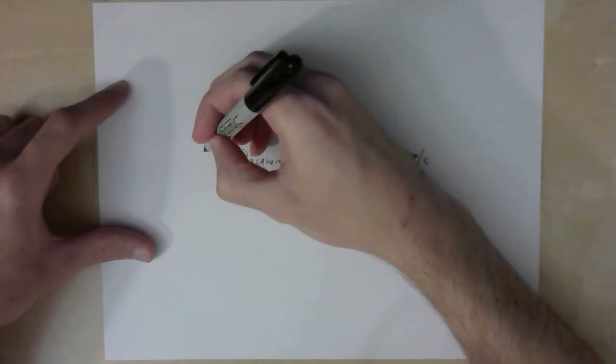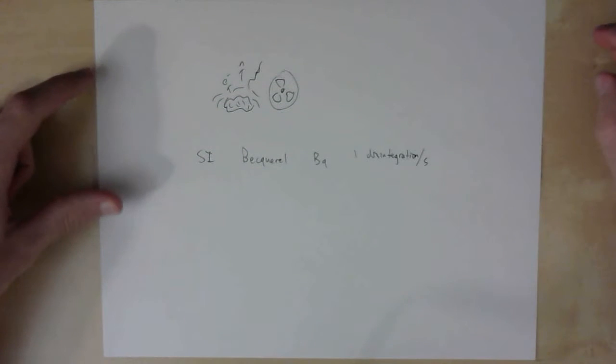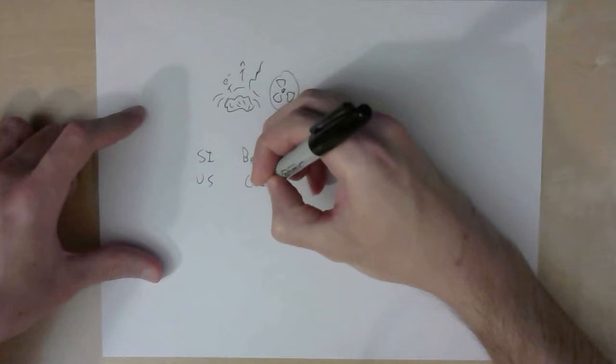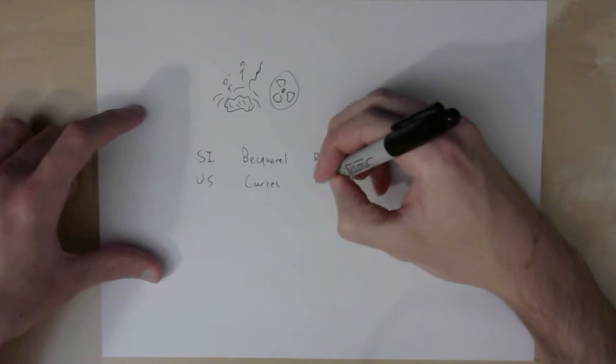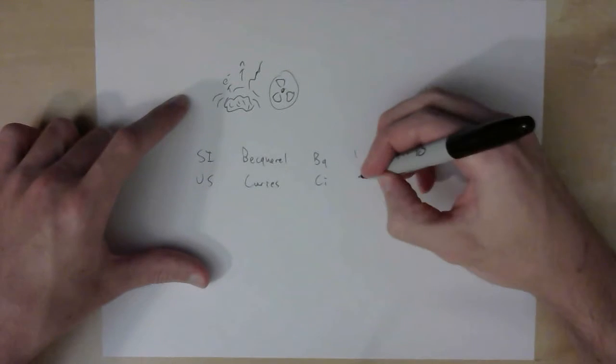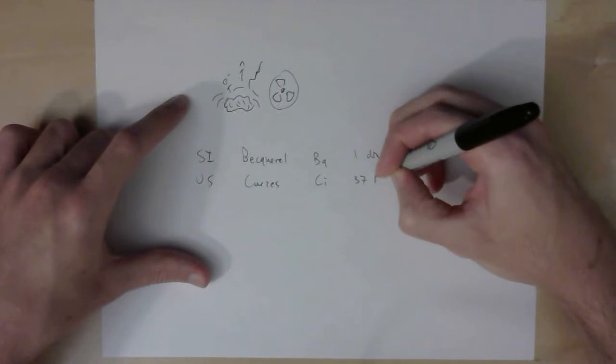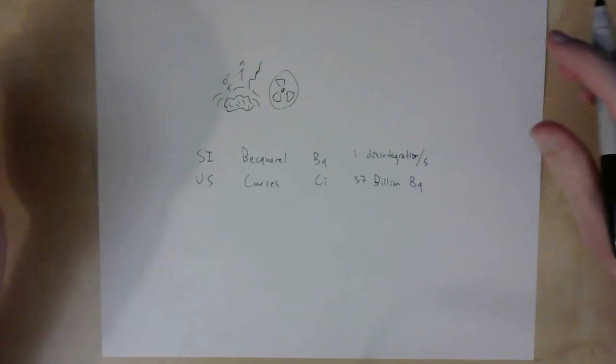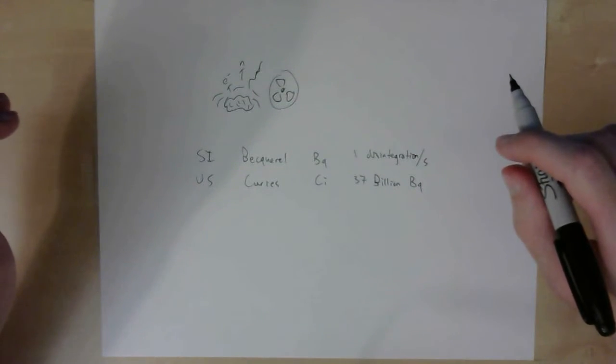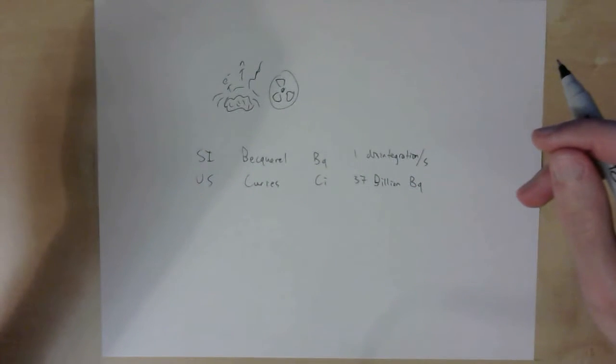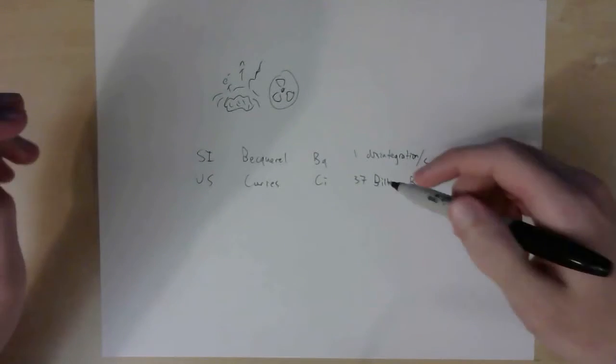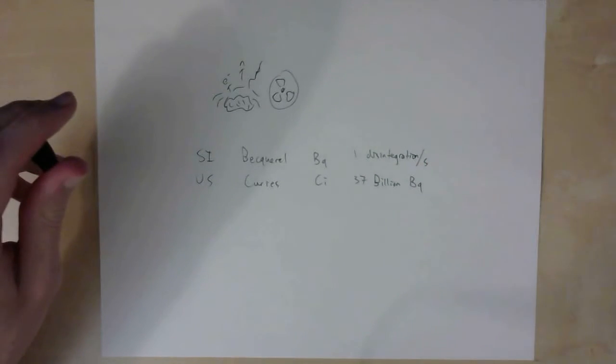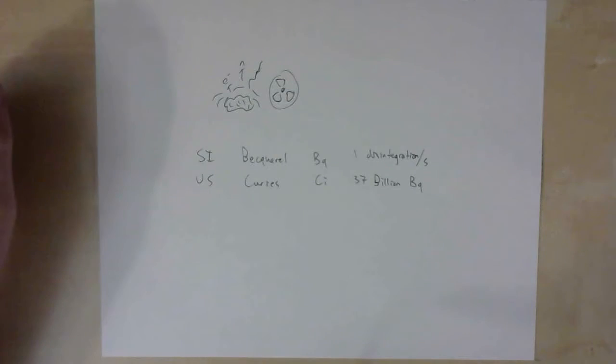And a Becquerel is one disintegration per second. And then this is the SI standard. So this is what the intelligent metric world uses. And then the US Imperial standard is Curies to describe radiation. This has the abbreviation of CI, and this is 37 billion Becquerels. That's what a Curie is equivalent to. So when the Curie was created, it was basically what the activity of a sample of radium was back in the day. So it's actually a sample of radium actually has a slightly lower activity, but the number stuck here. So it's empirical in nature, whereas the Becquerel is metric in nature.